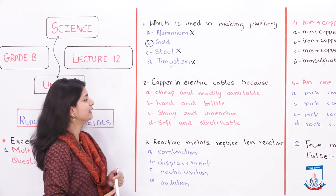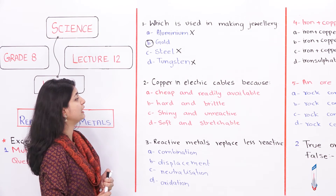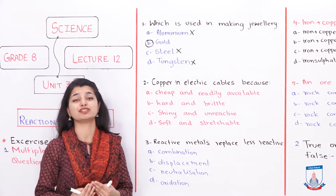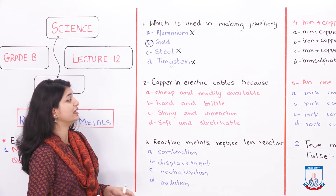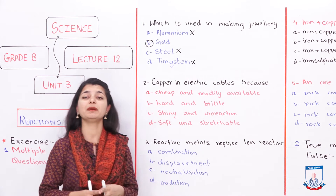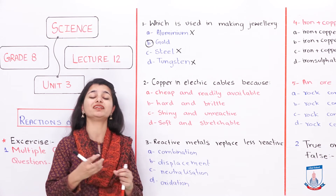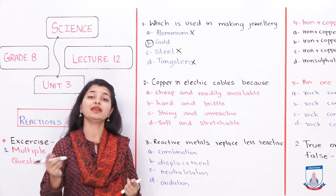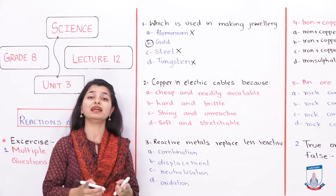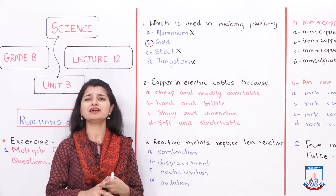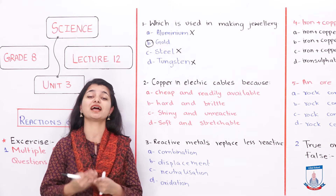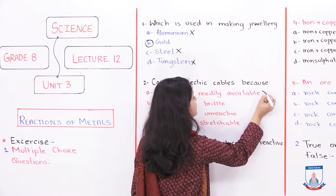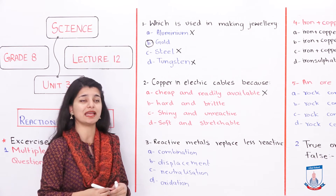Our second MCQ: copper is used in electric cables because... Option A says it is cheap and readily available. In the chapter, when we talked about abundant metals, we said aluminum is the most abundant, followed by iron. We never said copper is cheap, so option A is cancelled.